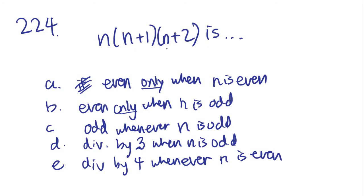This question is clearly testing number properties. N times (N+1) times (N+2) is a fancy way of saying three consecutive integers. With three consecutive integers, either one or two of them will be even, so no matter what — whether N is odd or even — the product will always be even.